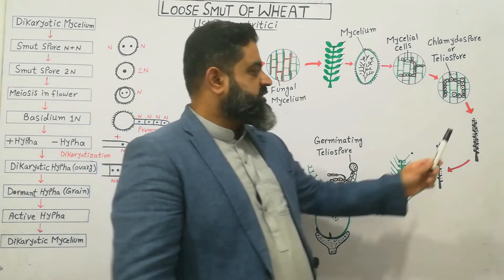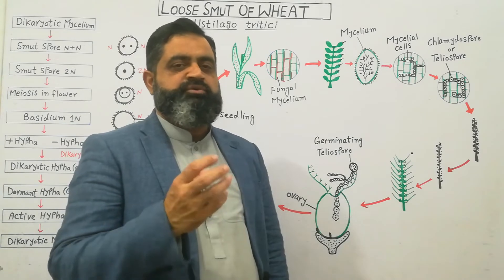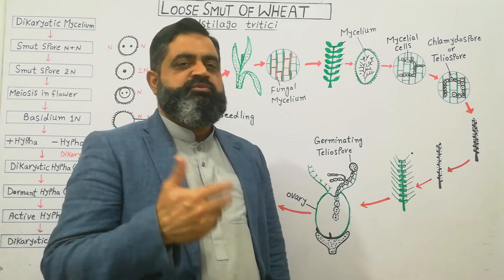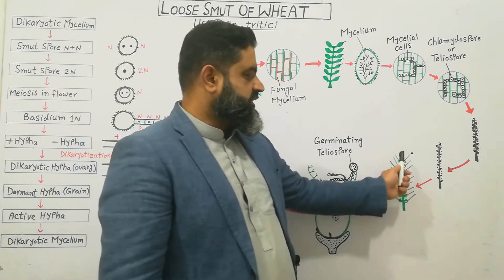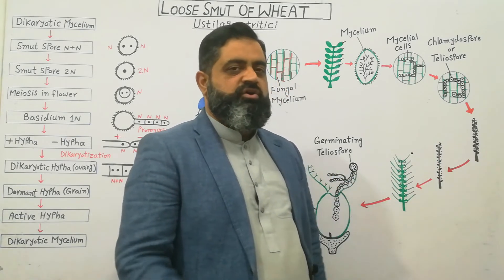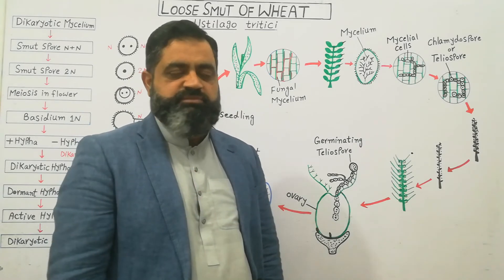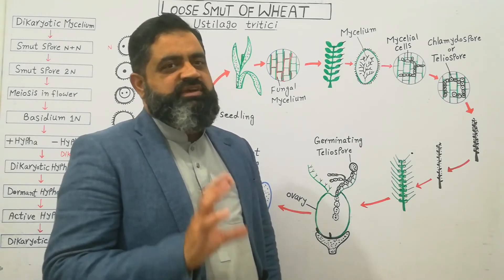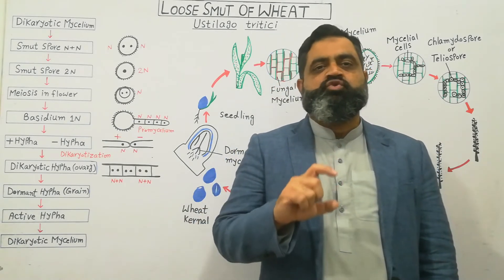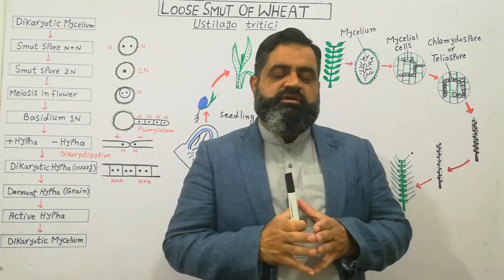These spores replace all the wheat kernels of the flower and produce enormous amounts of spores which can be dispersed by wind. These spores can then infect another healthy flower, with only the axis remaining and all the seeds destroyed by this fungus. In this way the life cycle has been completed. This is a very dangerous parasitic fungus which destroys different types of crops in different regions of the world.